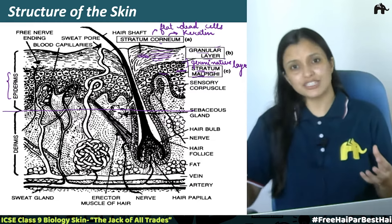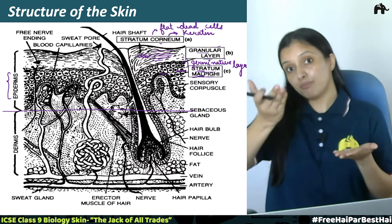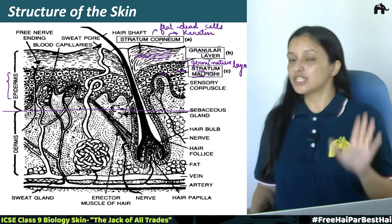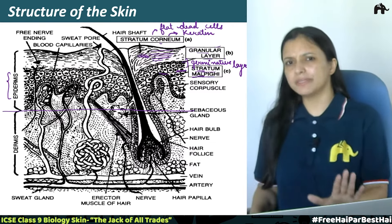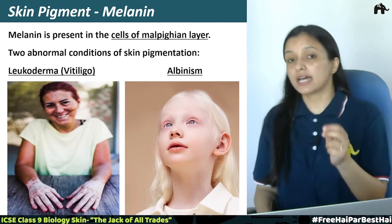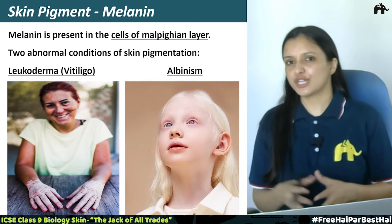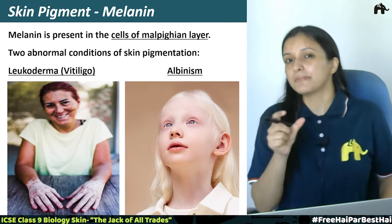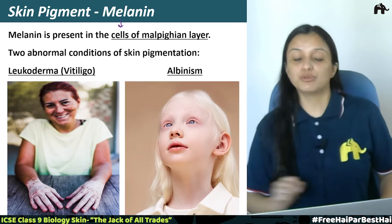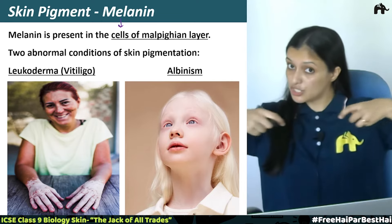The malpighian layer, also called the germinative layer or stratum malpighii, is where new cells are produced. When the outer cells are shed or fall off, this layer replaces them, pushing new cells upward. Now, before we move on to the dermis, let us discuss another important component present in the malpighian layer — the skin pigment called melanin.